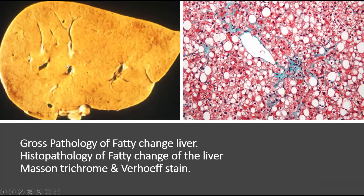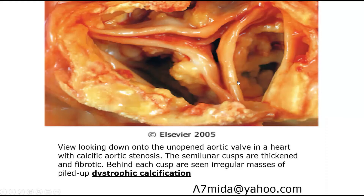Here is gross pathology of fatty change of the liver. You can see the liver is enlarged, yellow in color, and soft — yellow because the color of fat is yellow. This is gross examination. Then microscopically, you can see the liver cells showing vacuoles, which represent the accumulated fat that dissolves during preparation. This is gross and microscopic examination.